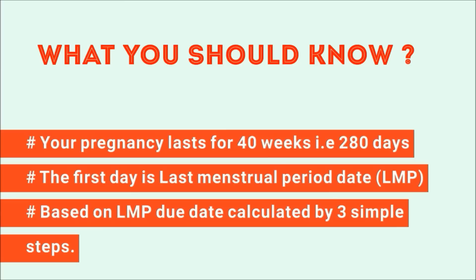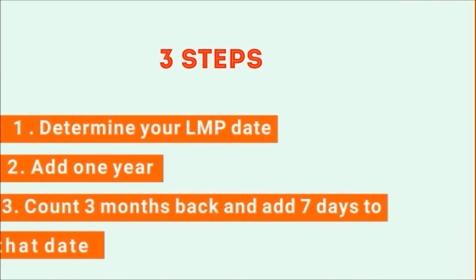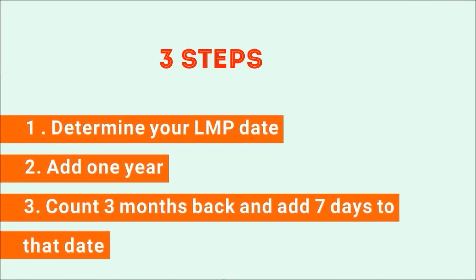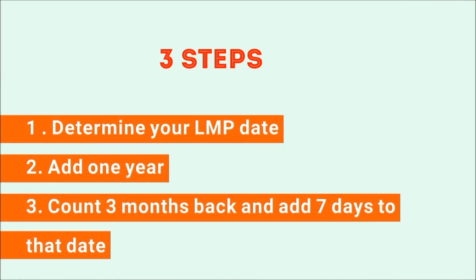Now based on your LMP, your due date is calculated by the following three steps. The first step: determine the first day of your period, that is your LMP date. The second step: add one year to your LMP date. The third step: count three months back and add seven days to that date.